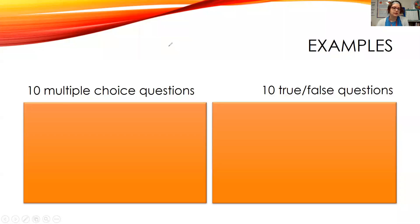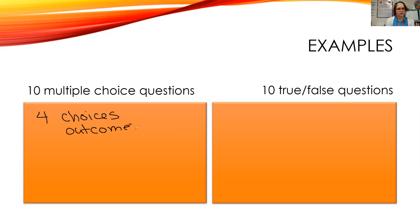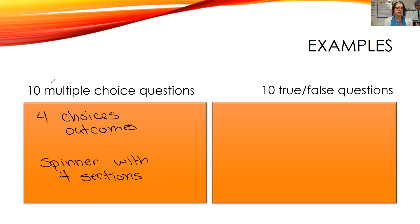How would we simulate 10 multiple choice questions? A standard multiple choice question has four choices, or four outcomes. A good way to simulate four outcomes is a spinner with four sections. And to simulate all 10, we would have a spinner with four sections spun 10 times to simulate each of the 10 multiple choice questions.